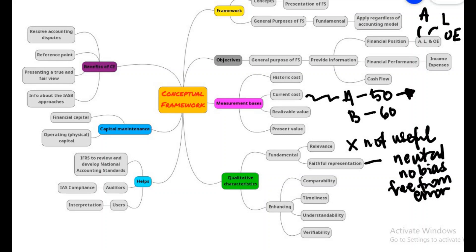For understandability: whoever is using the information we have prepared should be able to have reasonable knowledge of the business and its activities just by looking through the financial statement. Our financial statement should not be so complex that stakeholders, shareholders, investors, or the government cannot understand what we have written. For example, when creating the income statement or statement of comprehensive income, it should be very easy for users to see how much profit the company has made. That should be the main goal of our financial presentation.